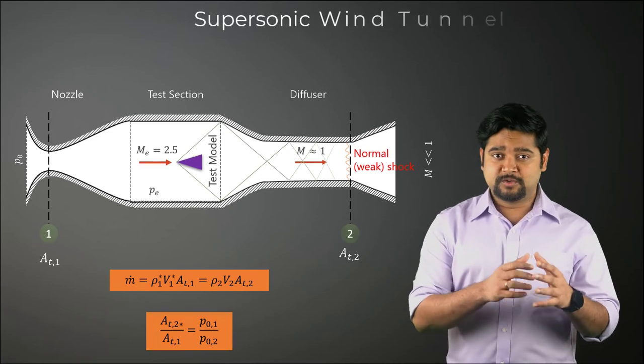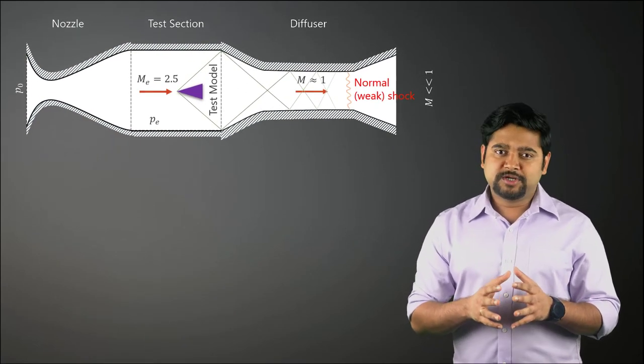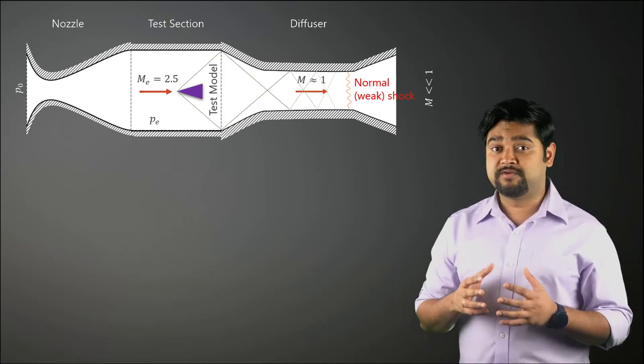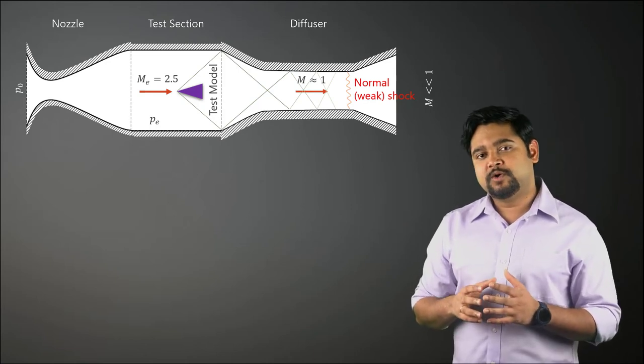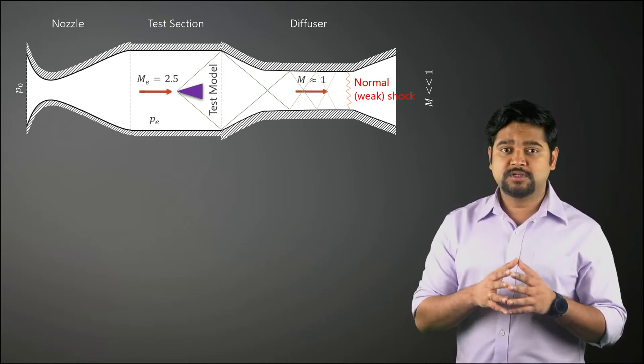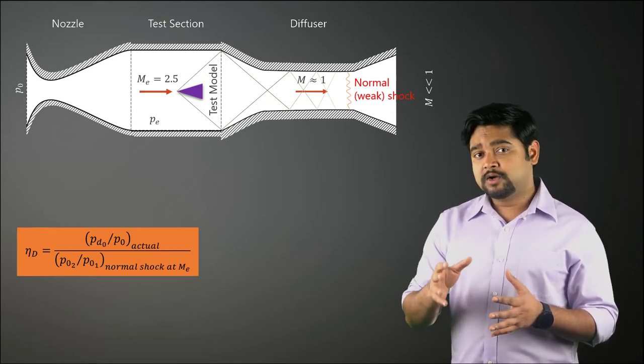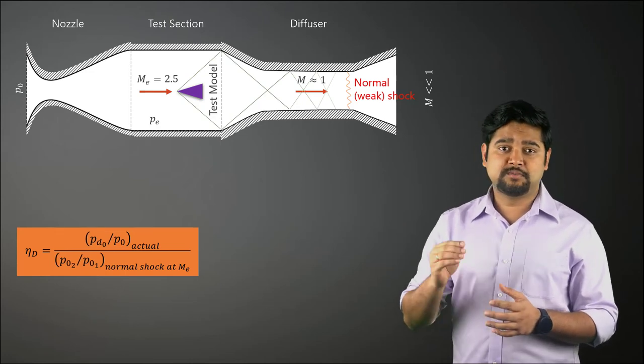Now that we have our diffuser ready for the wind tunnel experiment, we now need some metric to evaluate its performance. The most commonly used definition of diffuser efficiency related to wind tunnel work is based on the comparison of the actual total pressure ratio across the diffuser with the total pressure ratio across a hypothetical normal shockwave at the test section Mach number.